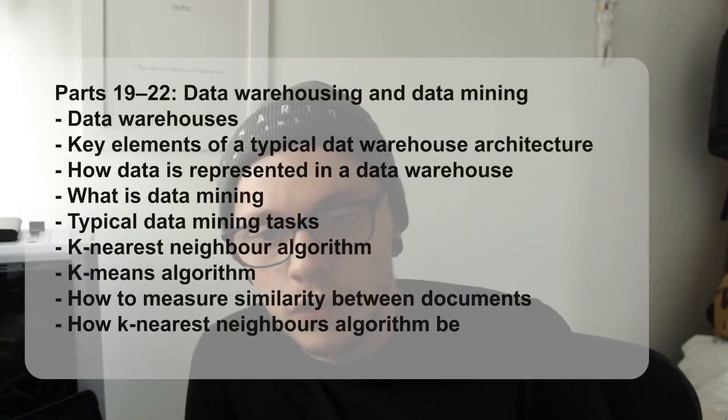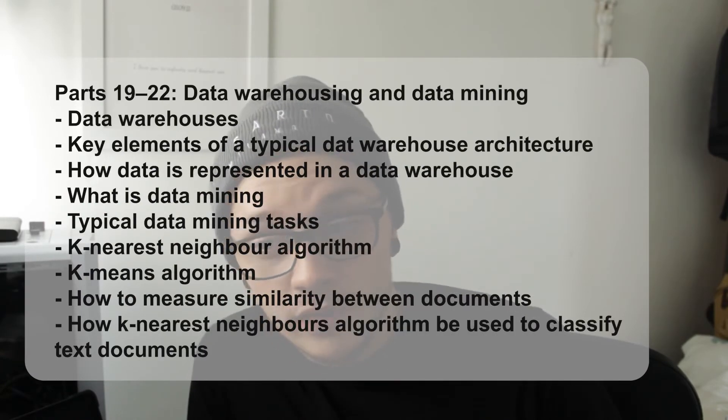Parts 19 to 22 look at data warehousing and data mining. You will look at key elements of a typical data warehouse architecture, how data is represented in a data warehouse, what data mining is, typical data mining tasks, the K-nearest neighbor algorithm, the K-means algorithm, how to measure similarity between documents, and how the K-nearest neighbors algorithm can be used to classify text documents.